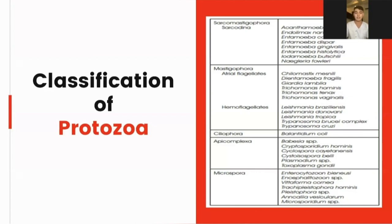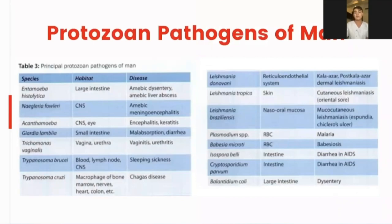For this particular discussion, we will only delve into the phylum Sarcomastigophora and the subphylum Sarcodina in particular. Here are some protozoan pathogens of man: Entamoeba histolytica, Naegleria fowleri, Acanthamoeba, Giardia, Trichomonas vaginalis, Trypanosoma, Leishmania, Plasmodium, Babesia, Isospora, Cryptosporidium, and Balantidium coli. Also highlighted are the habitat and specific diseases these particular protozoans cause.